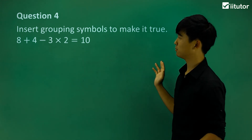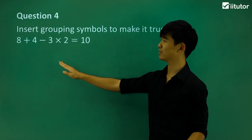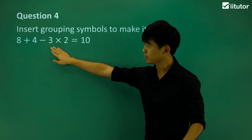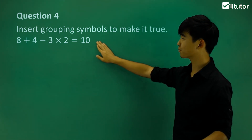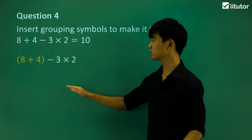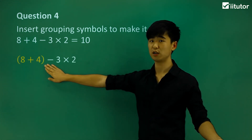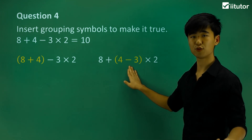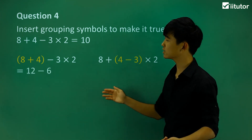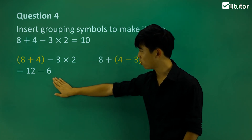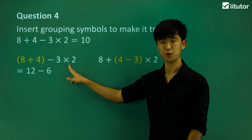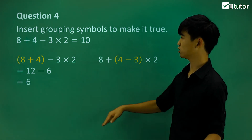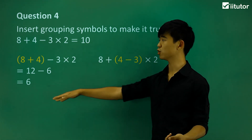Now let's move on to question 4. We actually have one more term than before — we have four numbers here — and we want to make it equal to 10. Let's first consider putting grouping symbols outside of 8 plus 4, and also outside of 4 minus 3. Now 8 plus 4 is 12, and 3 times 2 is 6, so if we put grouping symbols there we get an answer of 6, which is not equal to 10. So these grouping symbols are in the wrong position.